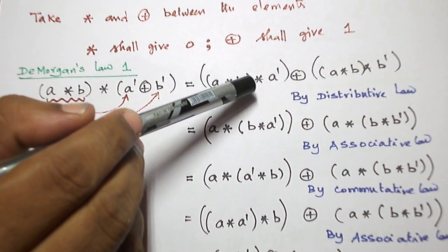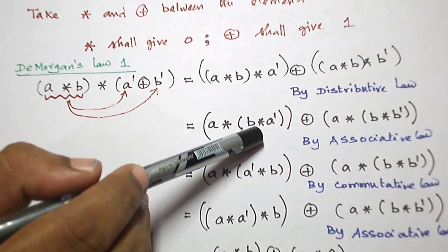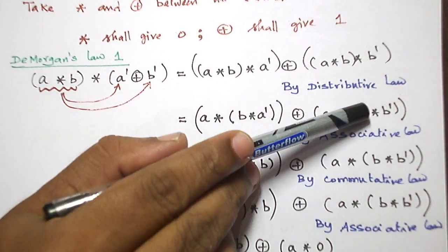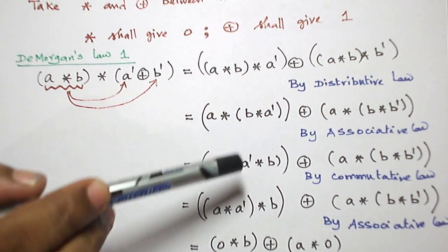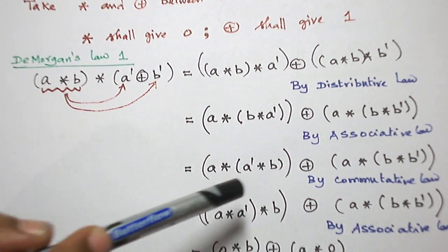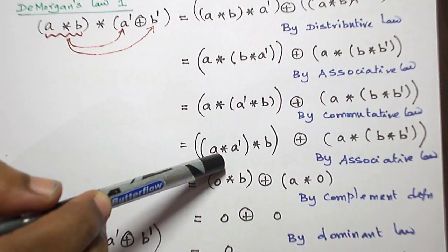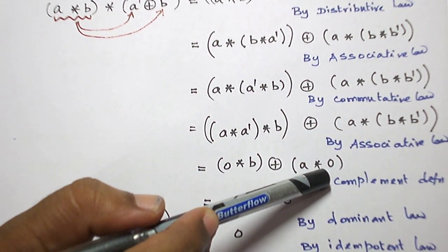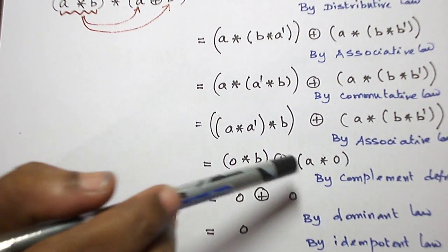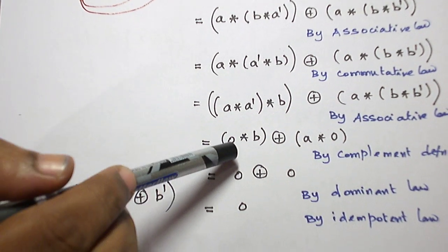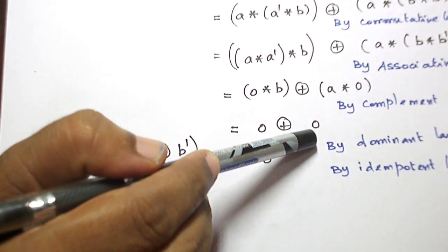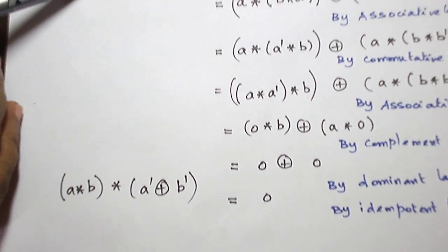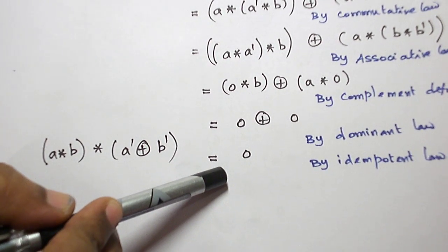Now change the bracket. Instead of A star B, take B star A dash by associative law. Similarly, instead of A star B, take B star B dash by associative law. B star B dash is kept as it is. B star A dash is changed to A dash star B using commutative law, and again change the bracket to A star A dash. Using complement law, A star A dash is 0. Similarly, B star B dash is 0. By dominant law, 0 star B is 0 and A star 0 is 0. Then 0 plus 0 by identity law is 0. So A star B star (A dash plus B dash) equals 0.